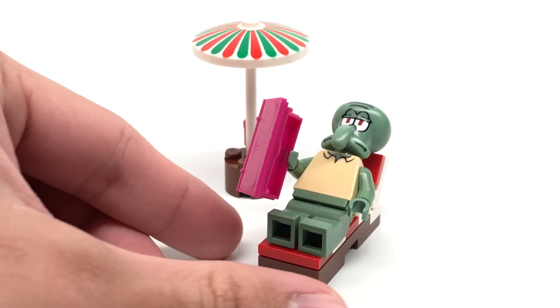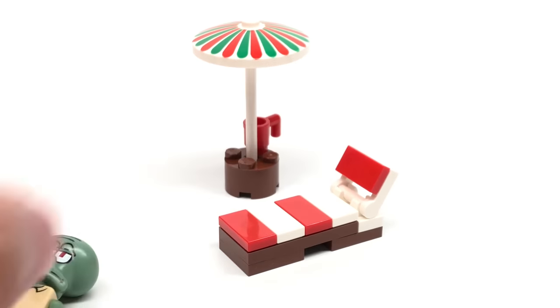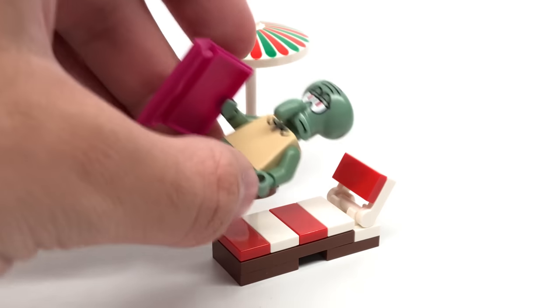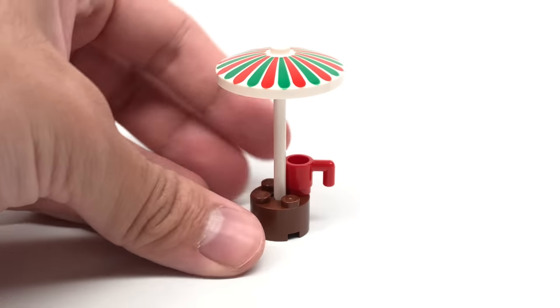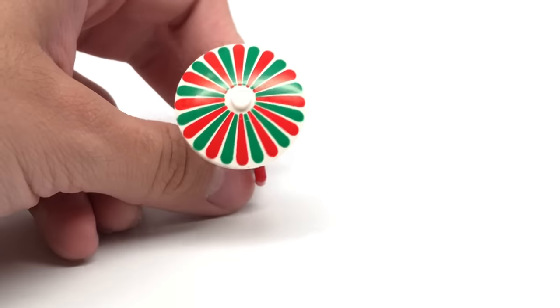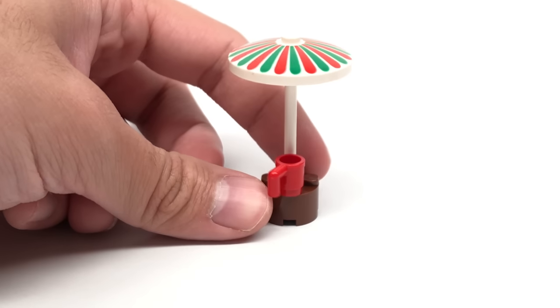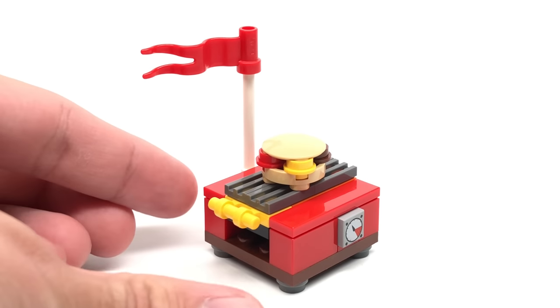There's a lounge chair for Squidward Tentacles, which the design of this is pretty simple. You have a nice stripe variation there. But other than that, not too much else going on. Also, there's this umbrella build for a little drink, as well as a printed top. That dish print is actually not new. It's pretty old. I think it was even used in Pizza to Go, but I might be wrong about that.